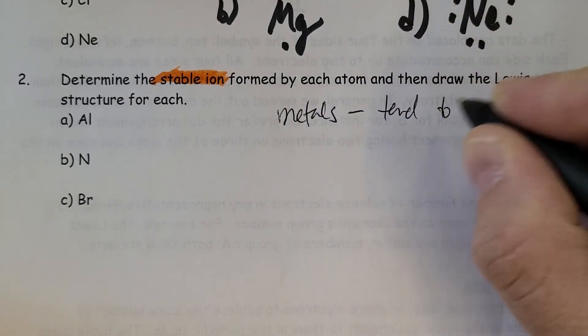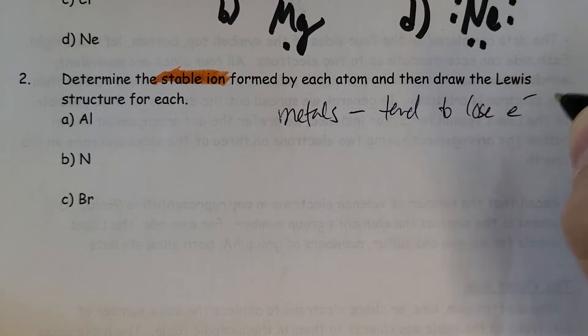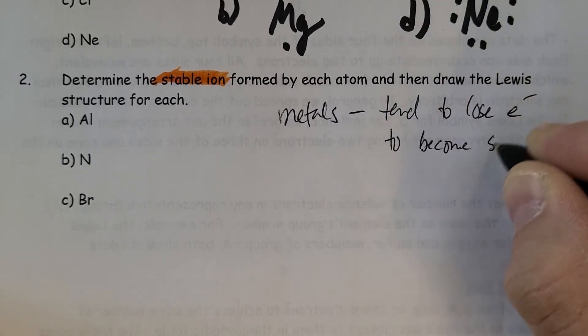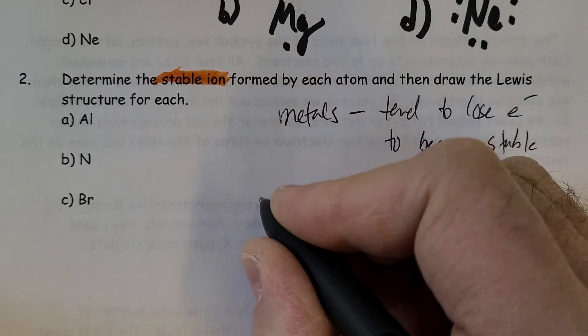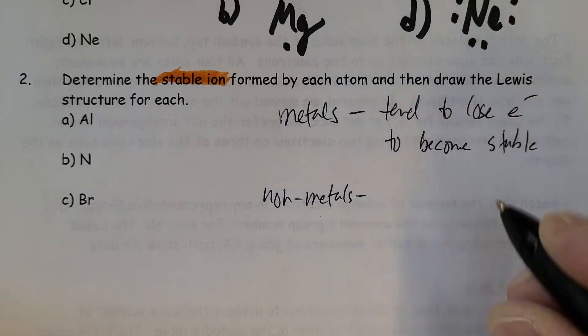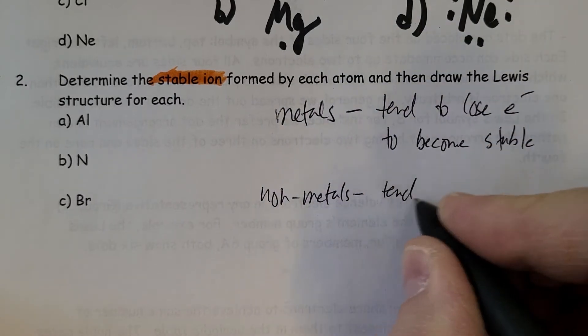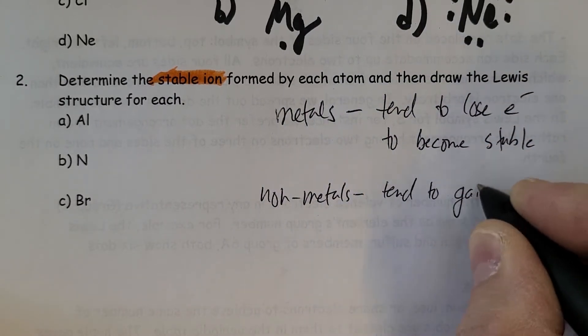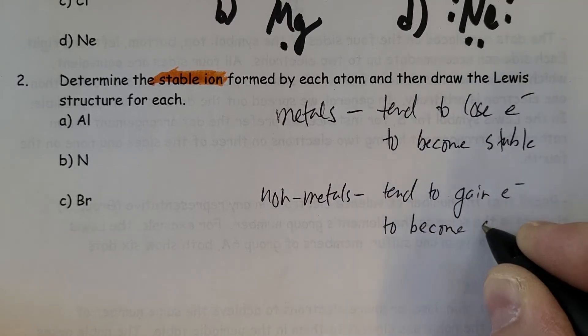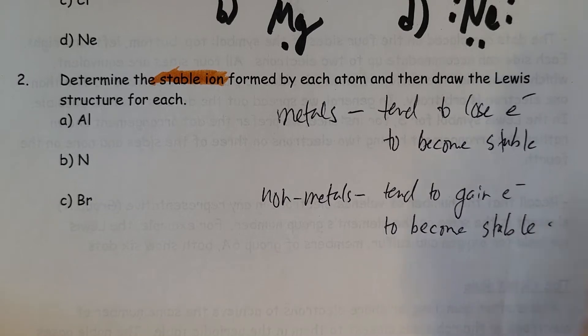Metals tend to lose electrons to become stable, whereas non-metals tend to gain electrons to become stable.